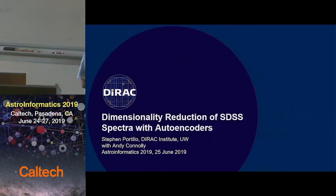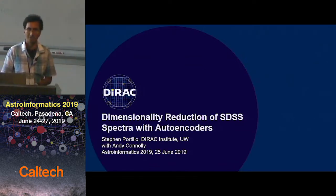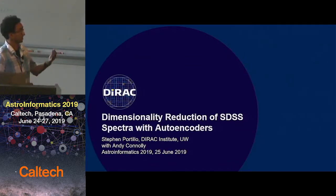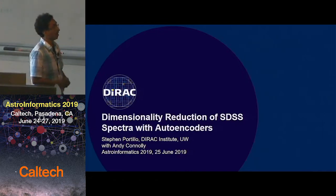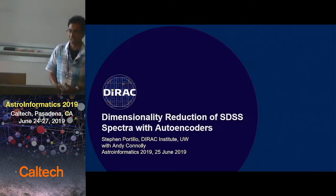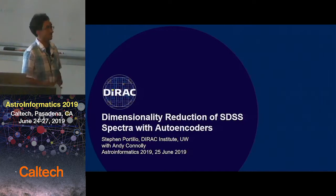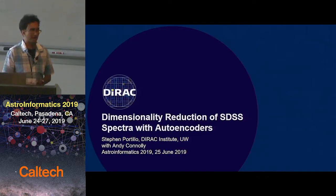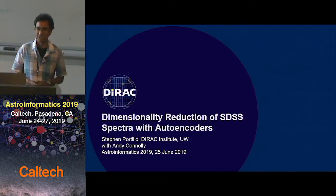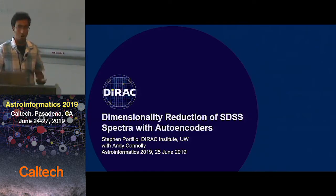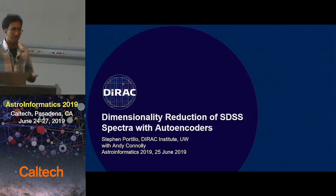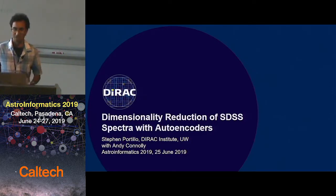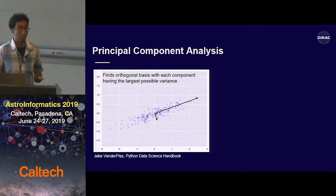Today I'll talk about some work in progress that I've been doing with Andy Connolly over at the Dirac Institute at the University of Washington on doing dimensionality reduction of the SDSS spectra using autoencoders. To motivate dimensionality reduction and why you might think about autoencoders, I'll start with a simpler, more familiar method of dimensionality reduction, namely principal component analysis.